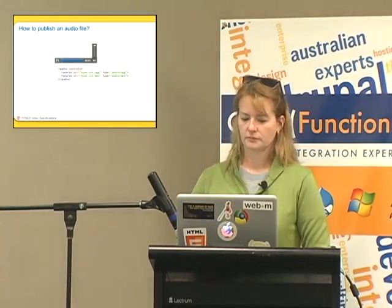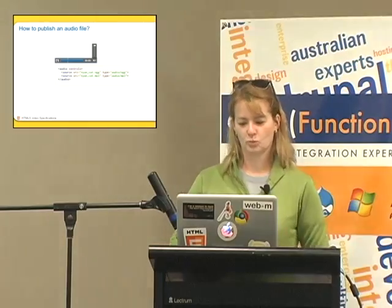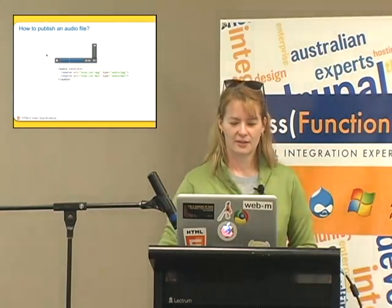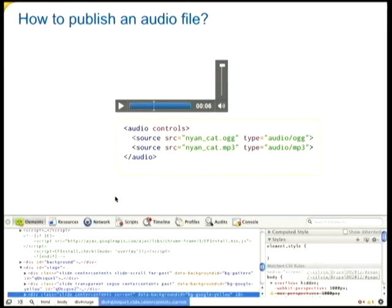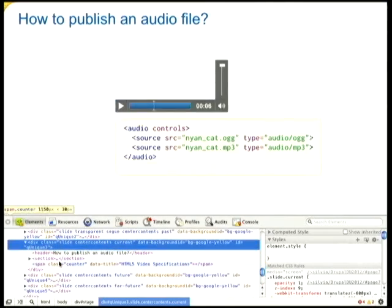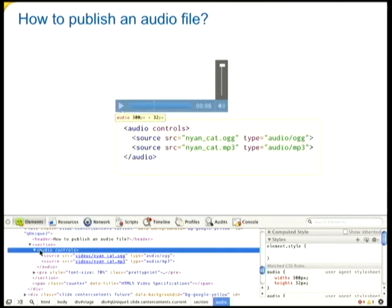You need to always provide at least two different file formats. In this case I've provided Ogg Vorbis and an MP3 file. Because this is Chrome, it's going to use the Ogg file for playback. What the browser actually does is go through the source elements from top to bottom and check which ones it is capable of playing back — the first one it finds that it's capable of playing back, it'll use that. That's all that's required to publish the audio element.